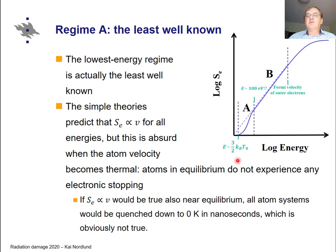So it is completely obvious that the electronic stopping power cannot be valid down to zero velocity. One can therefore make the simplistic argument that the lower energy limit of stopping power must be above the equilibrium thermal energy of the material, roughly 3/2 kT, because we know that this equilibrium temperature is stable and there can't be an electronic stopping power at those energies.